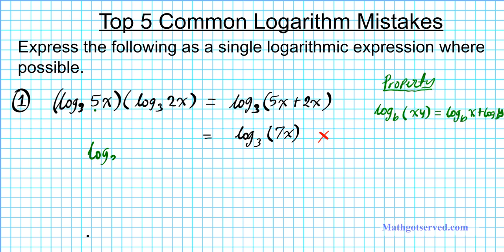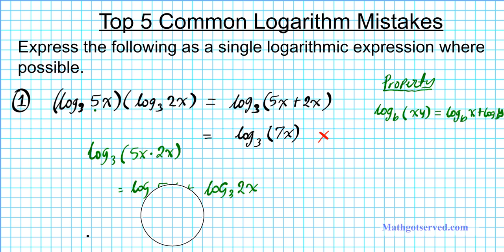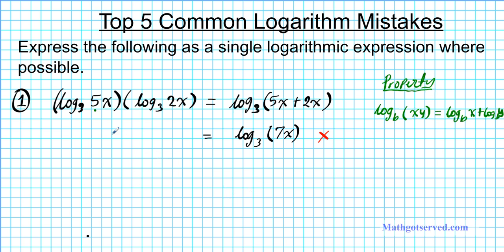Had it been log base 3 of 5x times 2x — a single log with a product argument — then you could apply the product property and expand it as log base 3 of 5x plus log base 3 of 2x. The product property is used to expand, not condense. So the arguments must be factors inside the log. The correct answer here is that the original expression cannot be simplified or condensed.